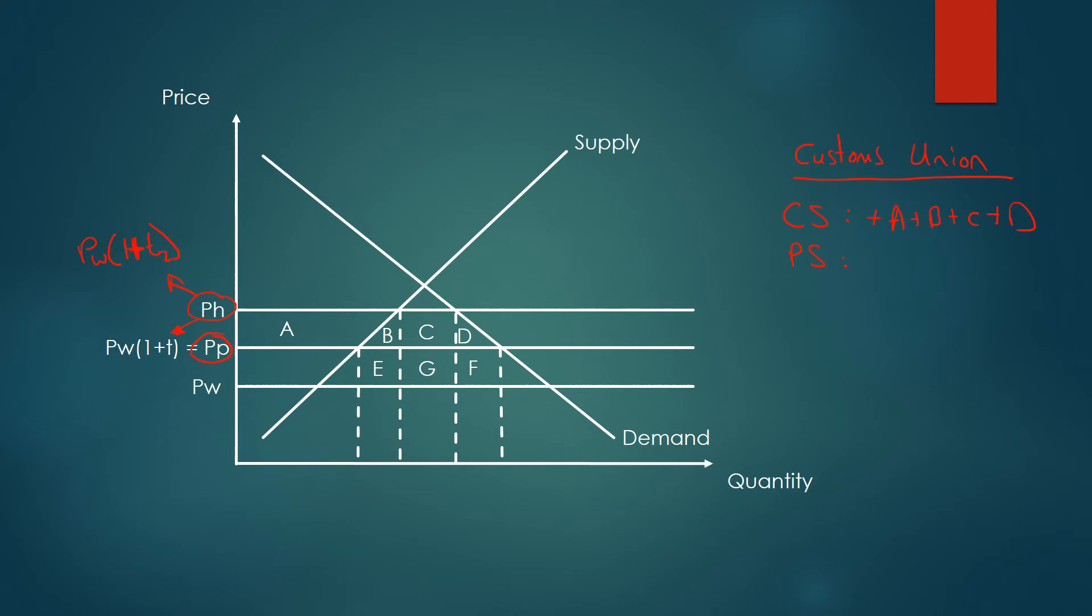How about producer surplus? Prices have reduced in the economy if we follow through this customs union, so producer surplus falls by A.